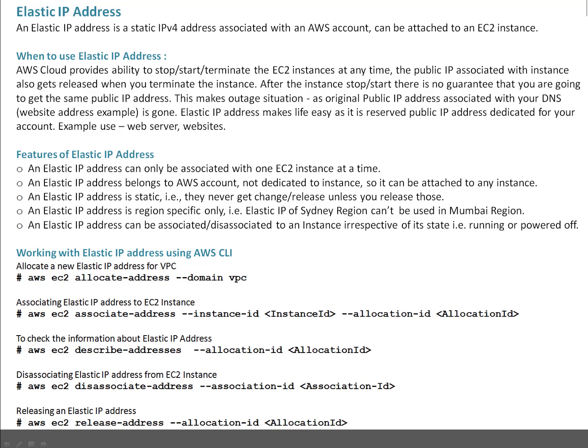On screen, you can see a couple of commands using Amazon CLI to allocate an elastic IP. The next command shows how to associate an IP to a running instance, or as mentioned earlier, irrespective of state — whether it's stopped or running, you can associate it with an EC2 instance. The next command tells how you can describe the information about the IP, meaning what is the allocation ID and what is the association ID. Allocation ID means when you allocate an IP, it gets a unique allocation ID. When you associate the elastic IP with an EC2 instance, at that time it gets an association ID.